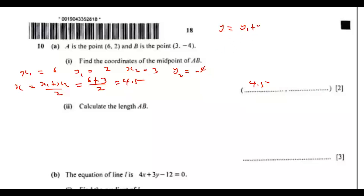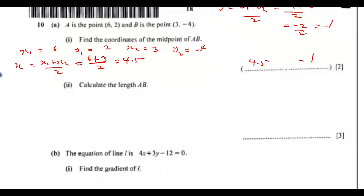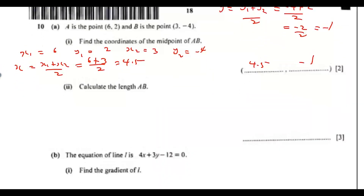Then y equals y1 plus y2 over 2, which is negative 4 plus 2 over 2, giving negative 2 over 2, which equals negative 1. So the midpoint is (4.5, -1).